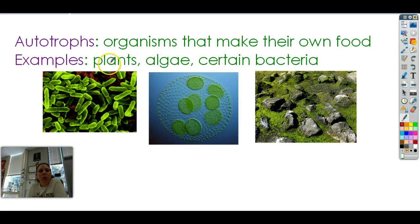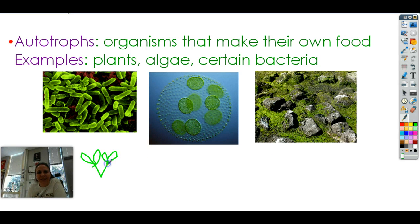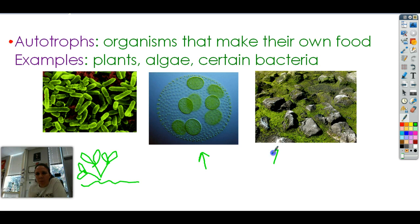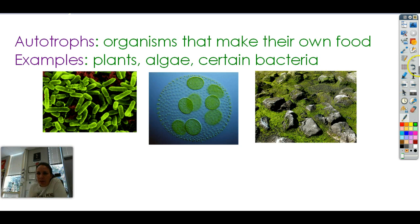So let's look at the words. Autotrophs — auto, all by yourself; troph, eat. These are any organisms that can make their own food. For example, plants. Plants are autotrophs — they make their own food. Algae makes its own food, it's an autotroph. Moss makes its own food. Certain bacteria make their own food — not all bacteria, just special ones. So if they can make their own food, which usually means they're green, then we call them an autotroph. We are not green, we do not make our own food.